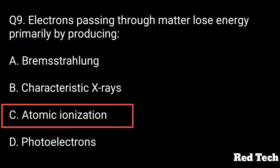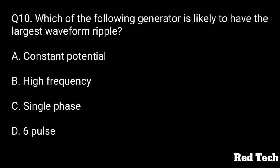Question number ten: Which of the following generators is likely to have the largest waveform ripple? Options: constant potential, high frequency, single phase, or six pulse. The right answer is single phase generator has the largest waveform ripple.